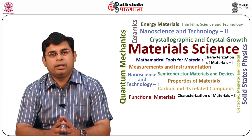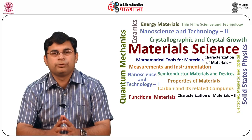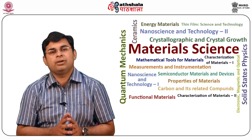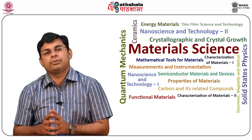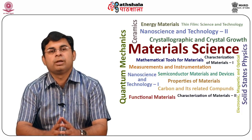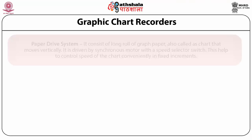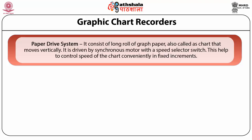Strip chart recorders record one or more variables with respect to time, so they are also called XT recorders. The paper drive system consists of a long roll of graph paper, also called a chart, that moves vertically. It is driven by a synchronous motor with a speed selector switch, which helps to control the speed of the chart conveniently in fixed increments.